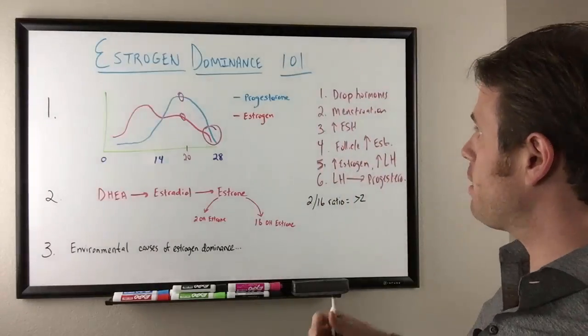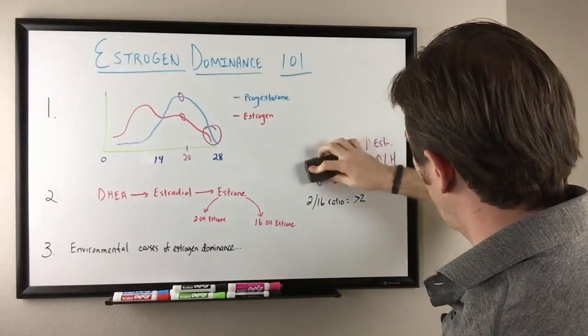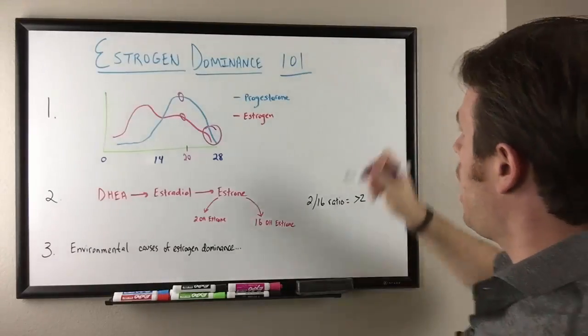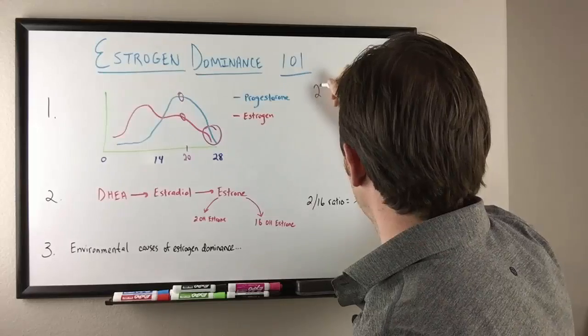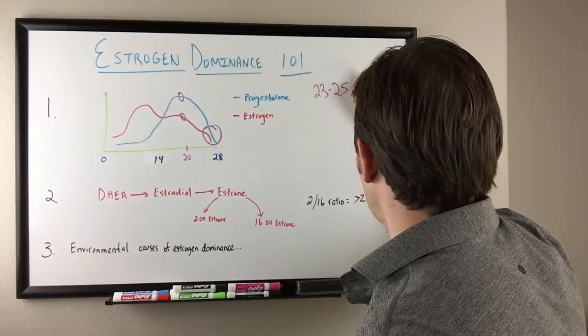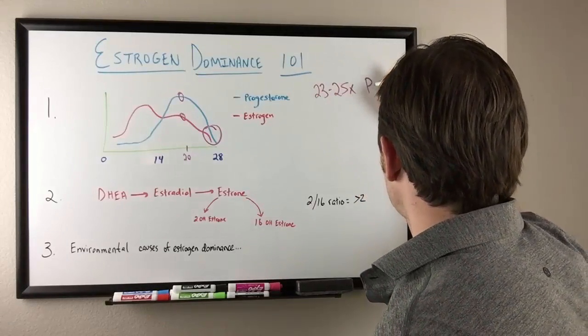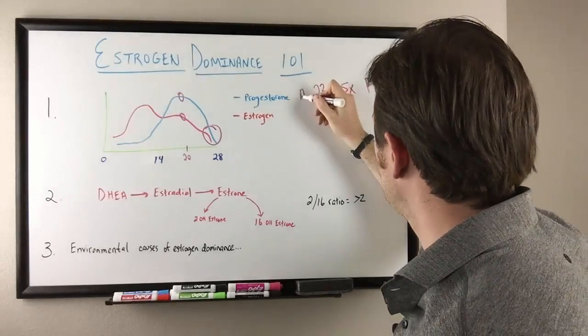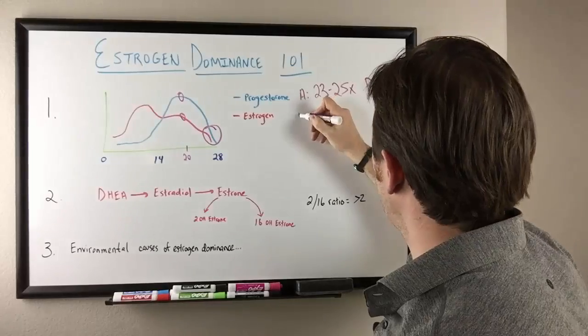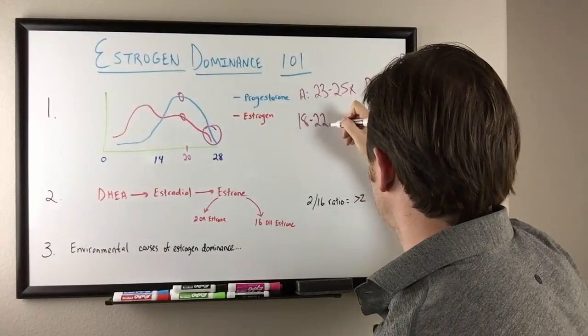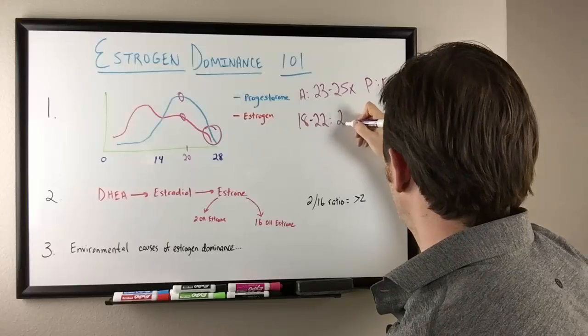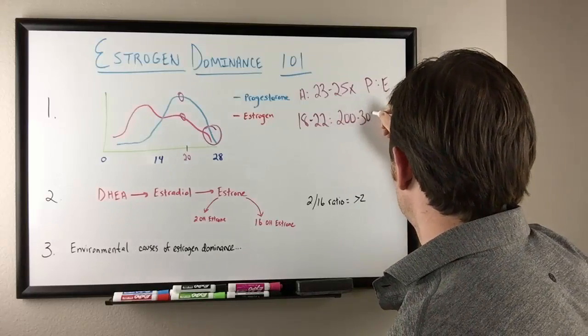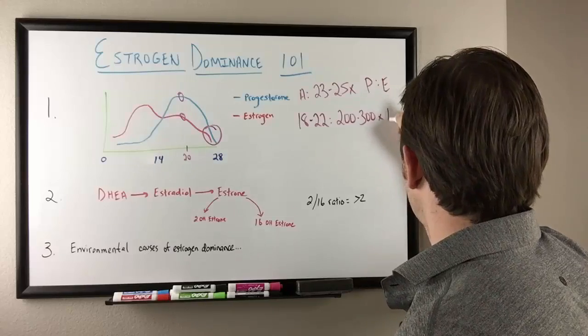Typically we start to see the ratio skewed. I'll write it up on my little chalk talk dry erase board. Our normal ratio is about 23 to 25 times progesterone to estrogen. That's our average. And then our peak day 18 to 22, it's about 200 to 300 times P to E.